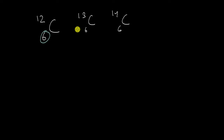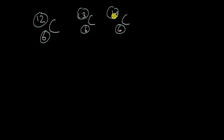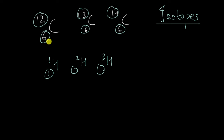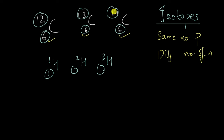All of these have the same number of protons — the same atomic number — but they have different mass numbers. These types of atoms, which have the same atomic number but different mass numbers, are called isotopes. Many elements have different isotopes. Even hydrogen, the first element, has three isotopes: ¹H₁, ²H₁, and ³H₁. All of these have the same atomic number 1, but different mass numbers 1, 2, and 3. Isotopes have the same number of protons but different numbers of neutrons, and only then can they have different mass numbers.